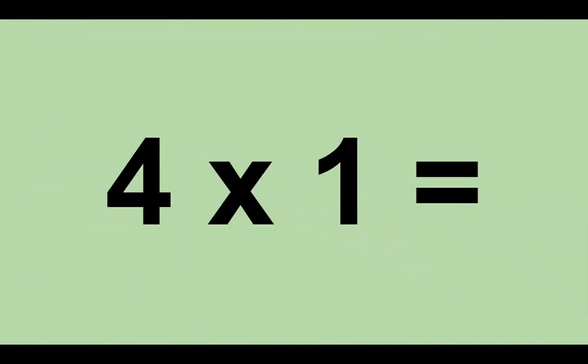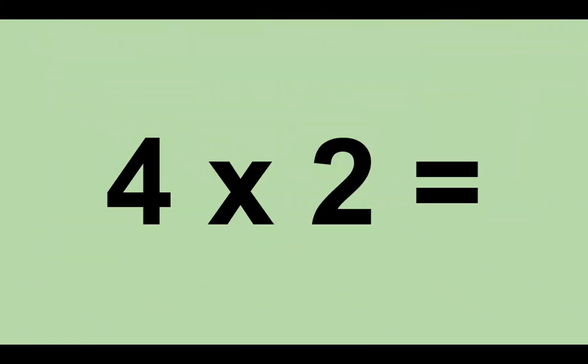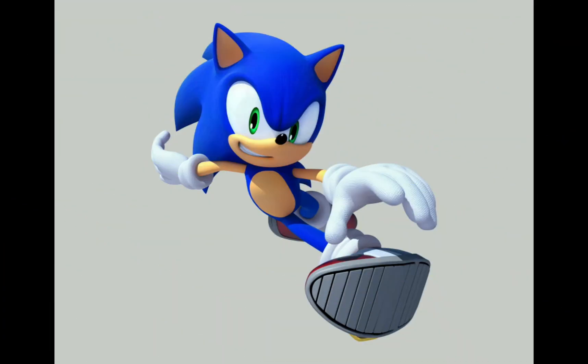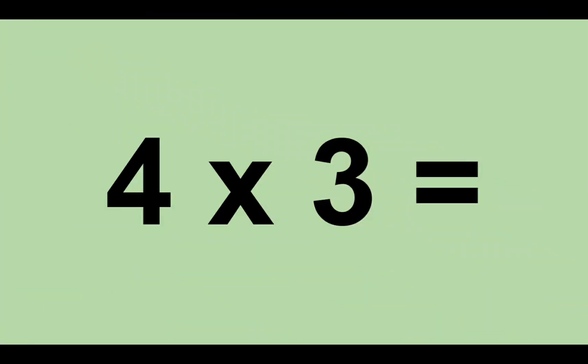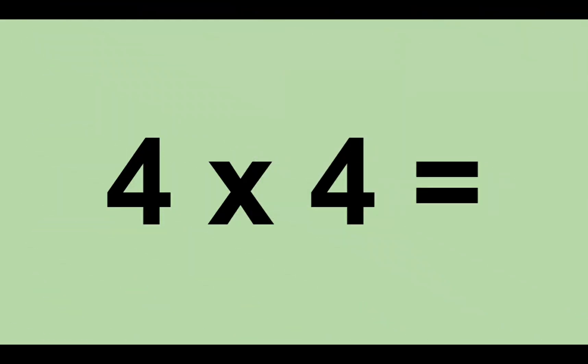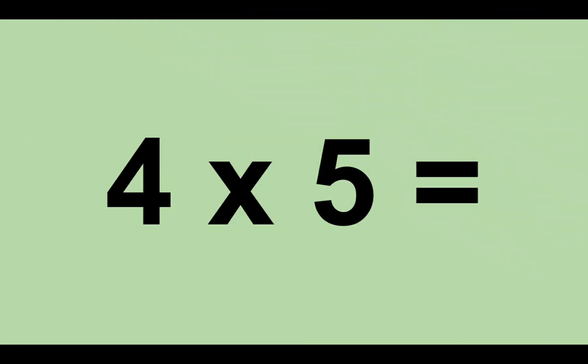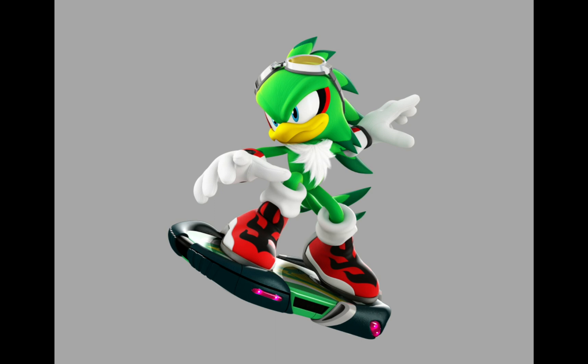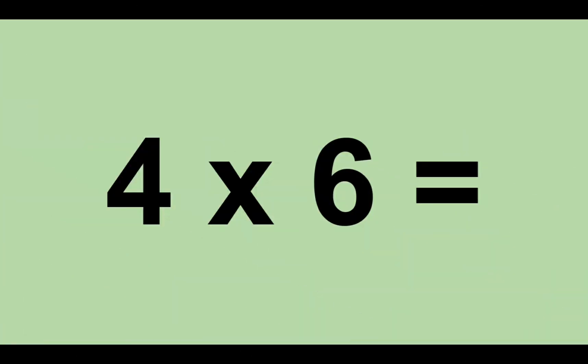Four times zero equals zero. Four times one equals four. Four times two equals eight. Four times three equals twelve. Four times four equals sixteen. Four times five equals twenty. Four times six equals twenty-four.